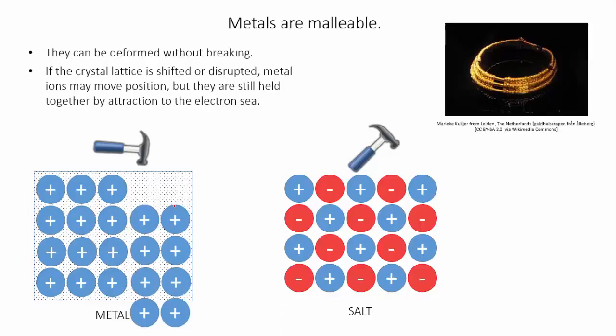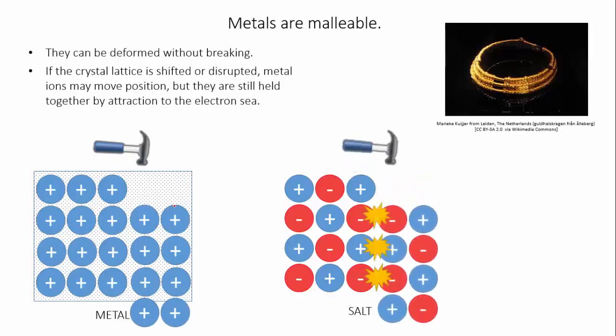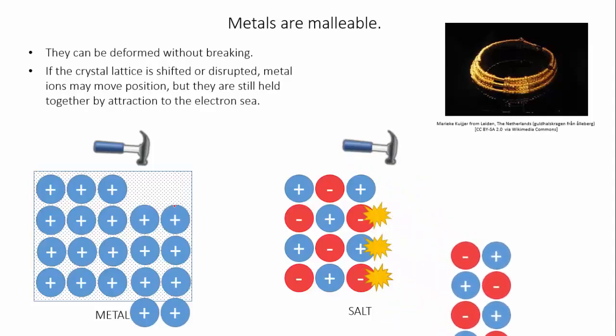This is in contrast to the ionic lattice, which relies on the attraction of neighboring oppositely charged ions. If an ionic lattice is deformed so that these oppositely charged ions are no longer neighbors, the electrostatic attraction is lost.